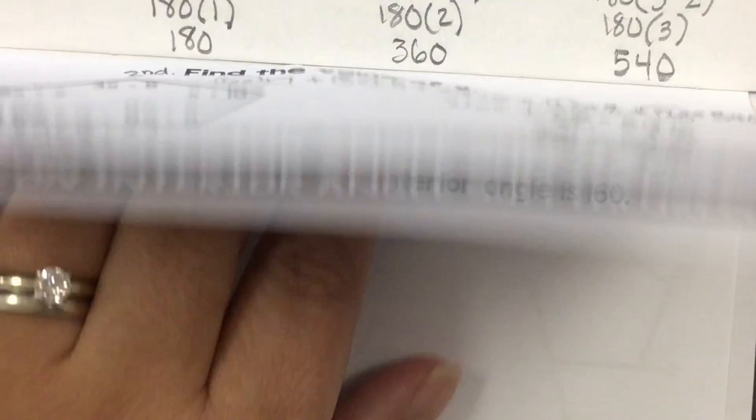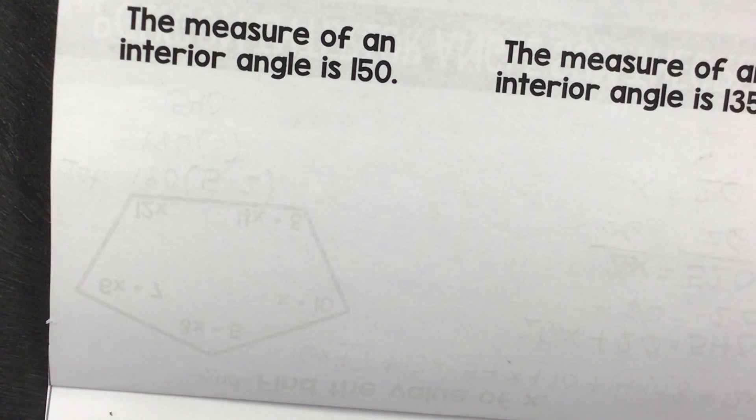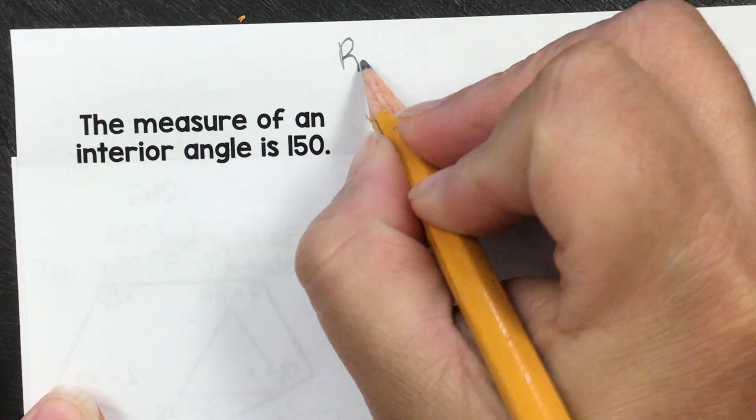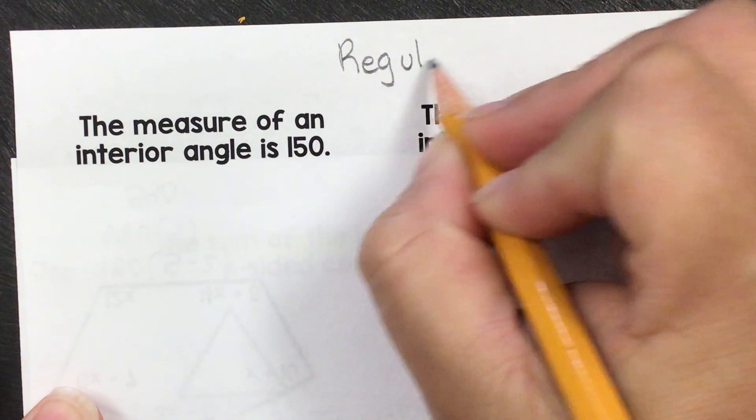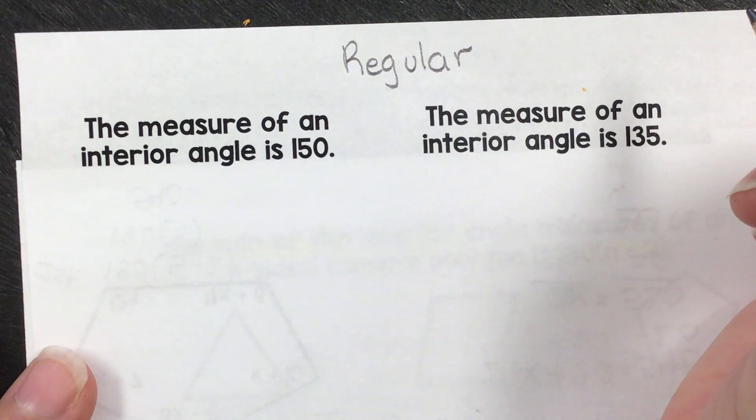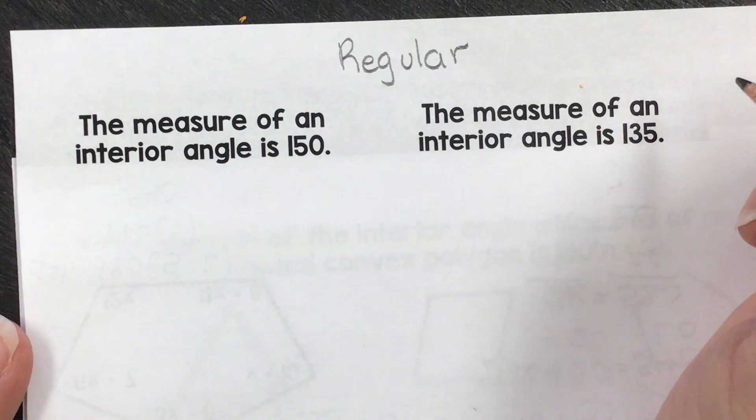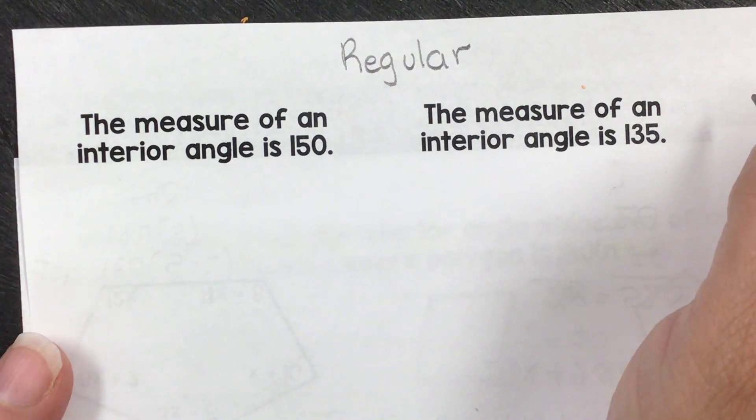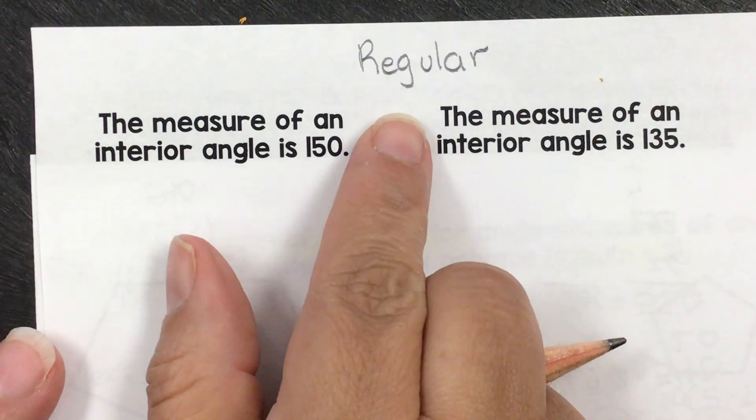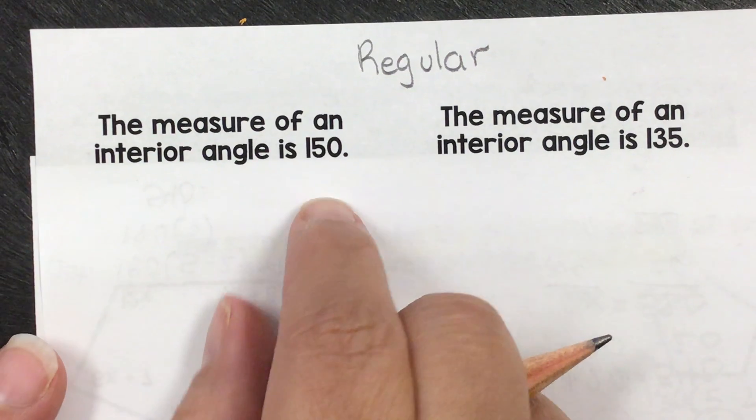All right, on the next part right here, for all of these we're assuming that it's regular. There's two conditions for a polygon to be regular. Do you remember what they are? Very good. All congruent angles and all congruent sides. So what we're assuming is that we have all angles are congruent. In the instructions for the test and for the homework it will say that.